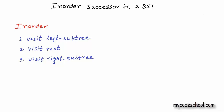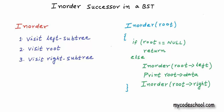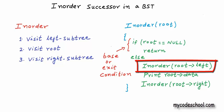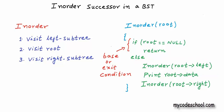Inorder implementation will basically be a recursive function, something like what I am showing here. There are two recursive calls in this function: one to visit the left subtree and another to visit the right subtree. Time complexity of inorder traversal is O(n), where n is the number of nodes in the tree. We visit each node exactly once, so time taken is proportional to number of nodes in the tree.